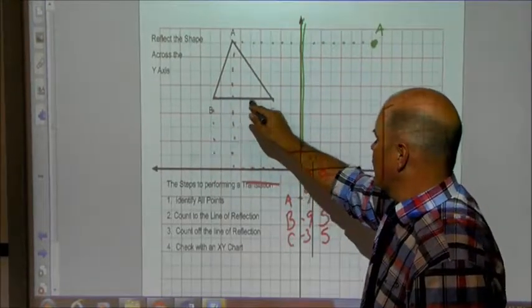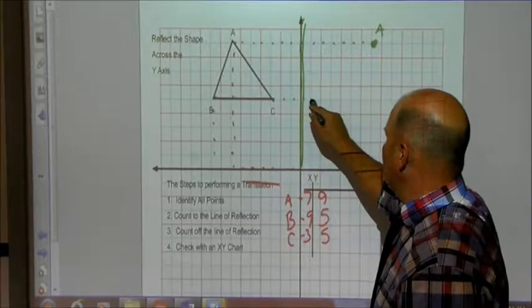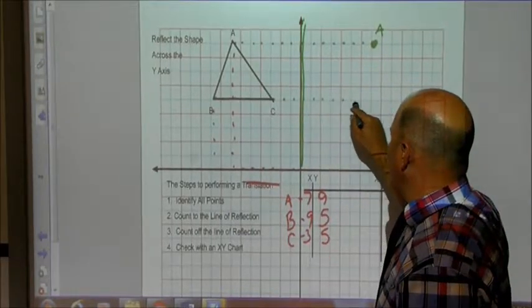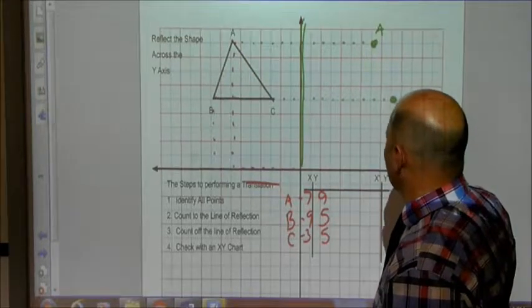B is 1, 2, 3, 4, 5, 6, 7, 8, 9 to my line of reflection. 1, 2, 3, 4, 5, 6, 7, 8, 9 off my line of reflection.